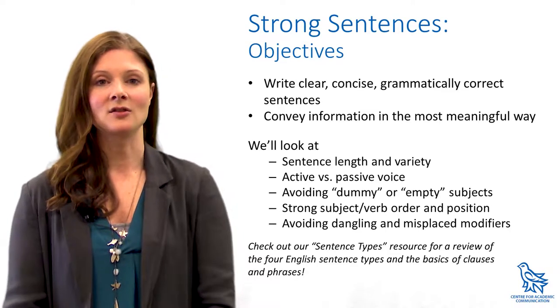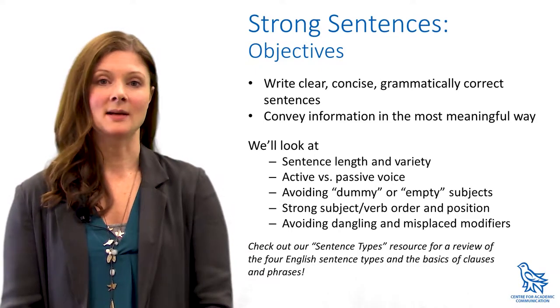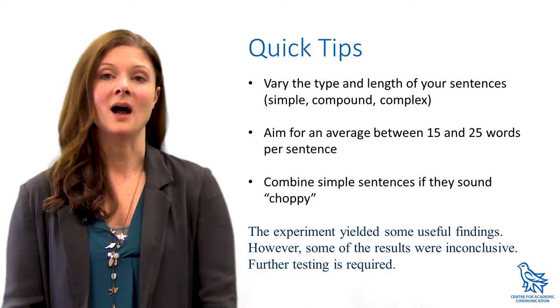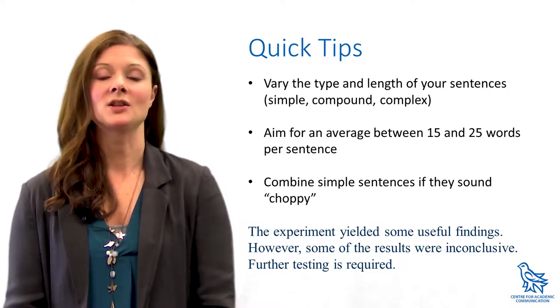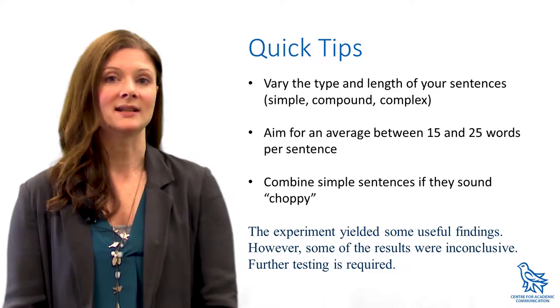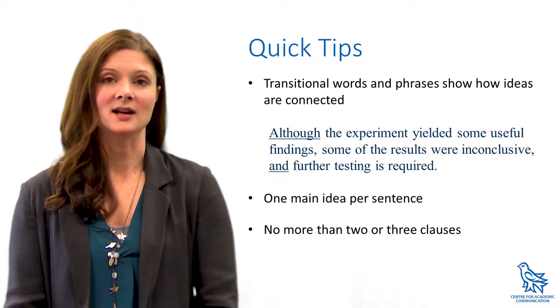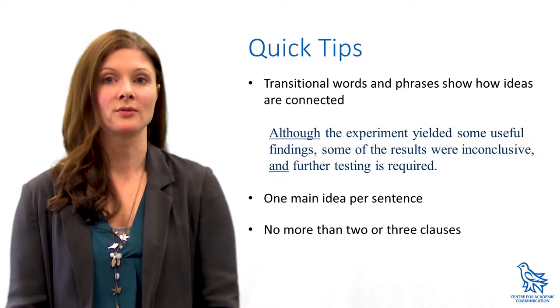We'll look at sentence length and variety, active and passive voice, avoiding dummy or empty subjects, strong subject and verb order and position, and avoiding dangling and misplaced modifiers. To begin with, keep in mind that most types of academic writing have an average sentence length of 15 to 25 words. Combine simple short sentences if they sound choppy and use transitional words and phrases to show how your ideas are connected. Try to stick to one idea per sentence and try not to put more than three clauses in a single sentence. In addition to keeping an eye on length, content, and connections, there are a few other things you can do to make your sentences strong.